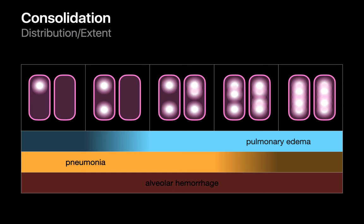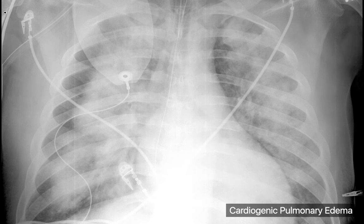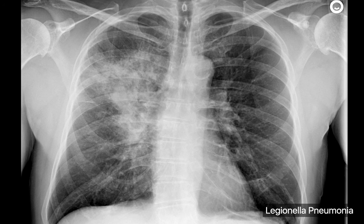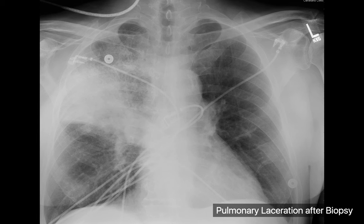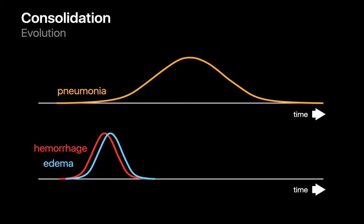Here are classic examples of consolidation in the setting of cardiogenic pulmonary edema, pneumonia, and alveolar hemorrhage. The evolution over successive chest x-rays also provides a hint: with pneumonia, consolidation usually progresses over days and resolves gradually. With pulmonary edema and alveolar hemorrhage, consolidation may appear quickly, sometimes over just a couple of hours, and when treated resolves relatively quickly too.